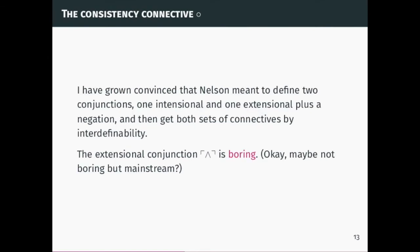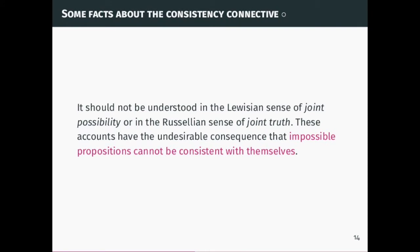Nelson was interested in defining entailment and having an actual connection of meaning between the antecedent and the consequent. He characterizes negation as contradiction, where the negation of a formula just means the contradictory of A. I took the decision to consider negation as extensional rather than intentional. We have a full set of intentional connectives, and we can get them all from the consistency connective — this circle here — which behaves sort of like a conjunction, but not quite.